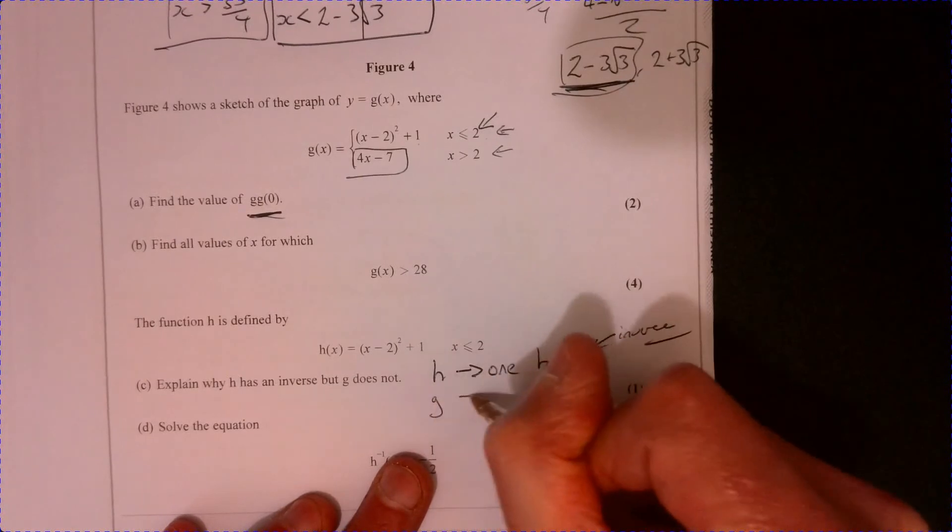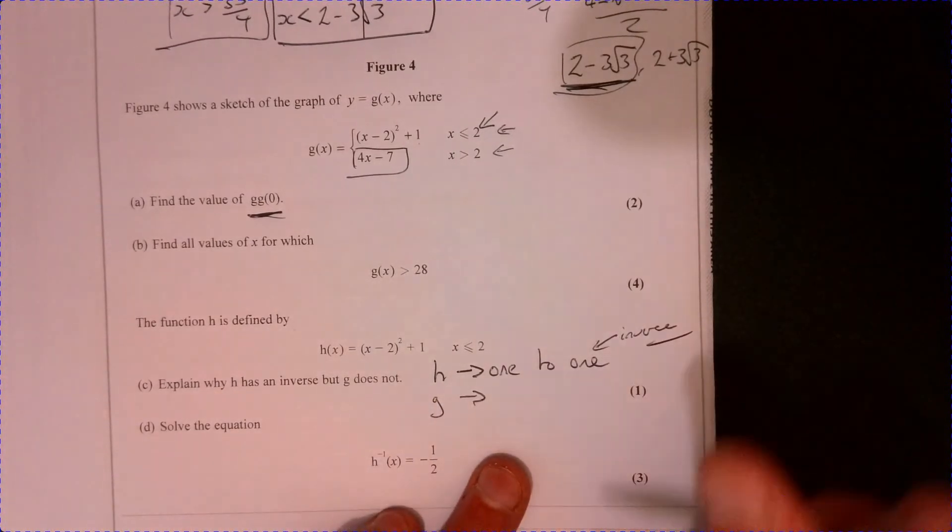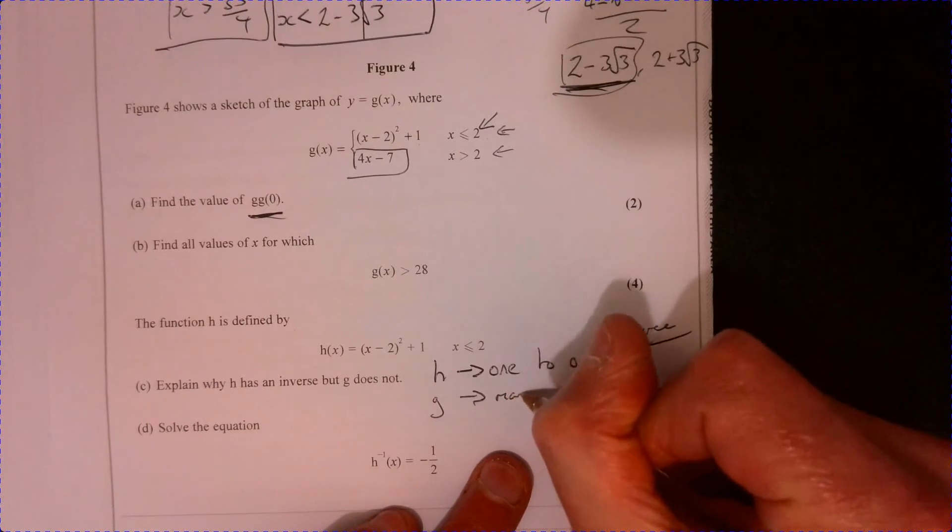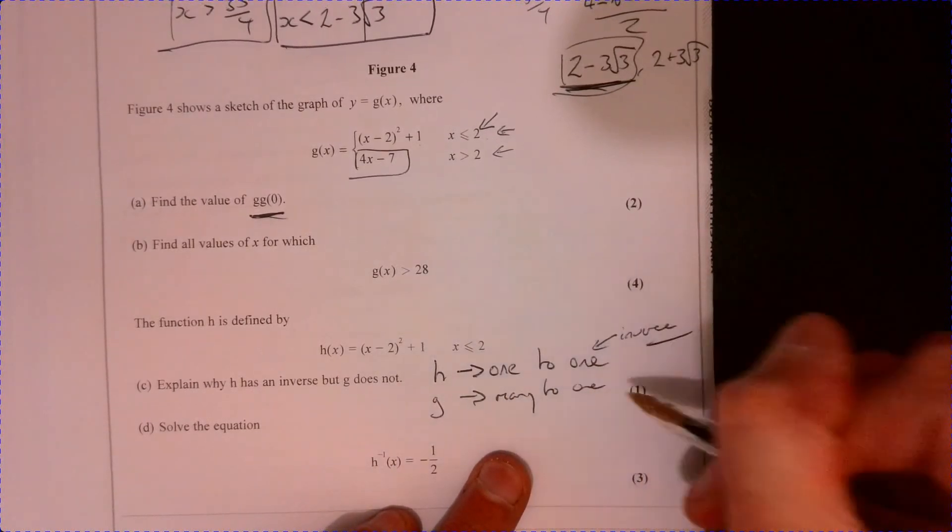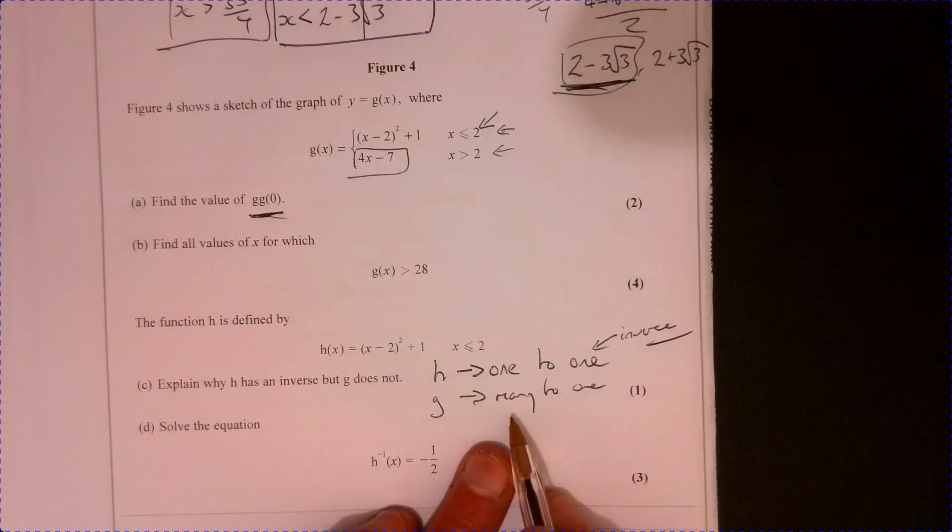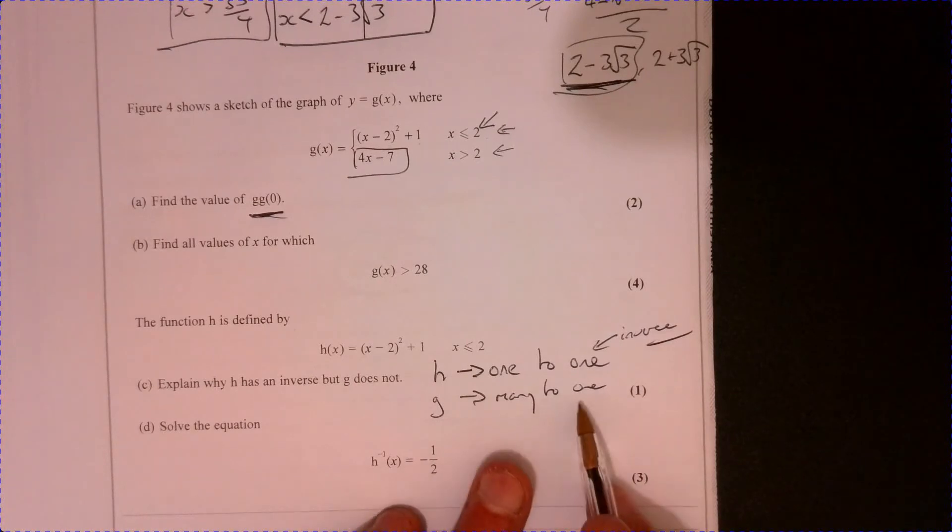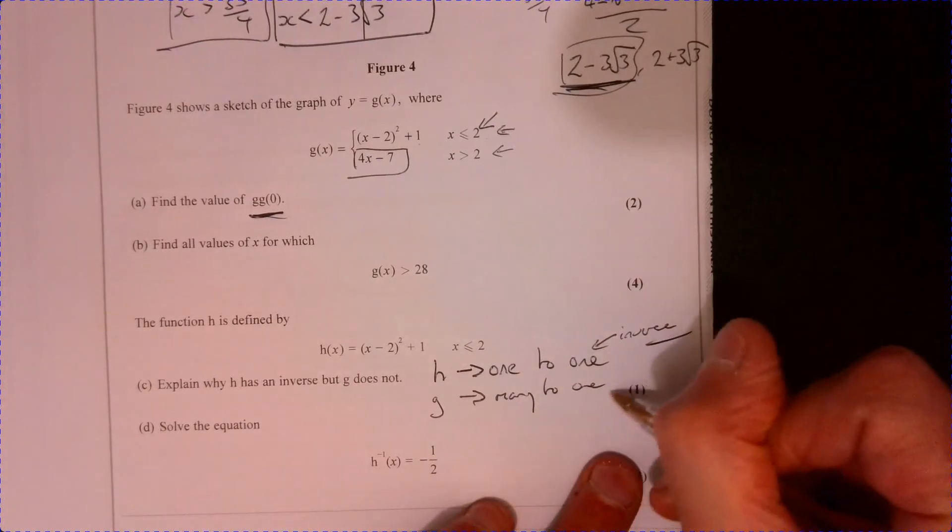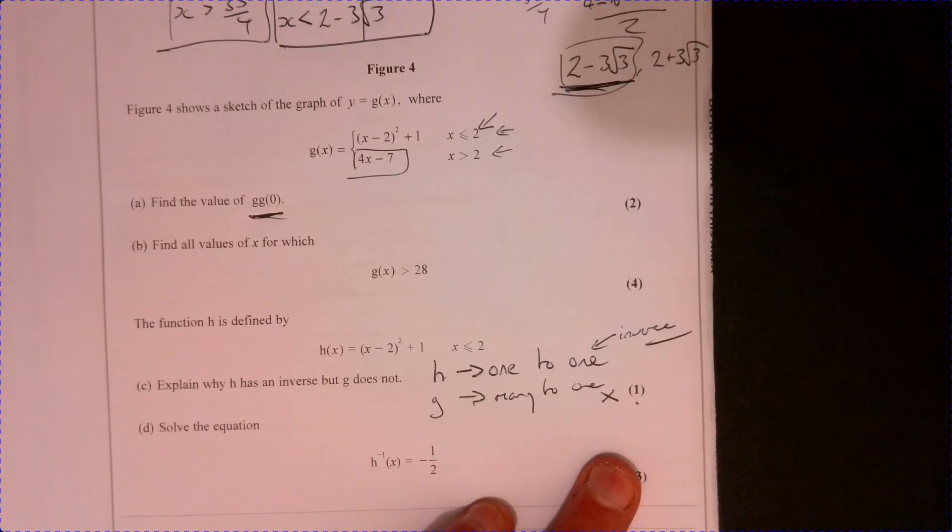But g, annoyingly, g is a many-to-one. So, basically, what that means is that a number of different possibles go to one answer. So that doesn't have an inverse.